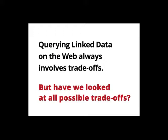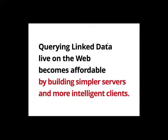We know we cannot have everything, but have we looked at all possible interesting combinations? What we've been working on the past two, three years with the team at Ghent University, Belgium, is a way of having simpler servers and having more intelligent clients. If you start from a SPARQL endpoint where all intelligence is in the server, we try to get as much intelligence as possible out of the server and put it into the client. If we take all intelligence out of the server, we just have a data dump — so we're looking for a compromise somewhere in between.